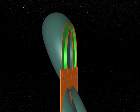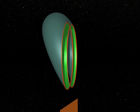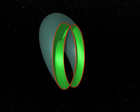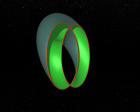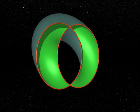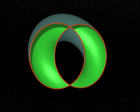Now look carefully. The plane cuts the torus along two perfect circles. This is Villarceau's theorem: a plane which is bi-tangent to the torus cuts it along two circles.